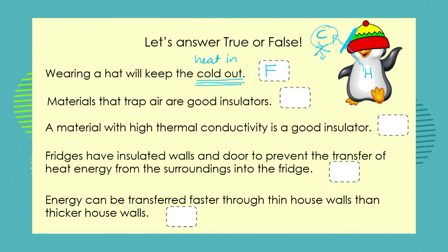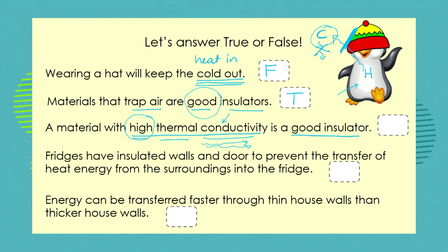Next statement: materials that trap air are good insulators. Think about the fur on Arctic wolves or the feathers on our penguin — they trap air and therefore they are good insulators. That one is true. Next: a material with high thermal conductivity is a good insulator. If something has high thermal conductivity, it speeds up or allows heat energy transfer to happen rapidly, meaning it is not a good insulator. So that statement is false.